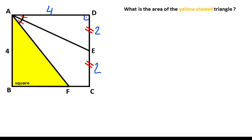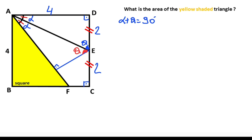The corners of the square are 90 degrees, so these angles must also be 90 degrees. After that, if you draw a perpendicular from point E onto the line AF like this, let's call this angle alpha. Here is also alpha, and here let's call it theta. Notice that alpha plus theta equals 90 degrees, so here must be equal to theta.